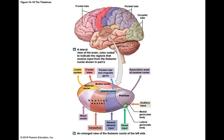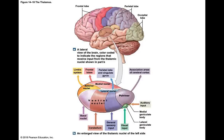The anterior nuclei are part of the limbic system, where emotions are generated. The medial nuclei connect to the frontal lobe and make you aware of your emotions — the anterior nuclei make you feel emotions, but the medial nuclei make you aware of them. The pulvinar contains the dorsal nuclei, which send sensory information to the cerebral cortex — touch, vibration, pain, temperature — synapses here and then goes up to the cortex.